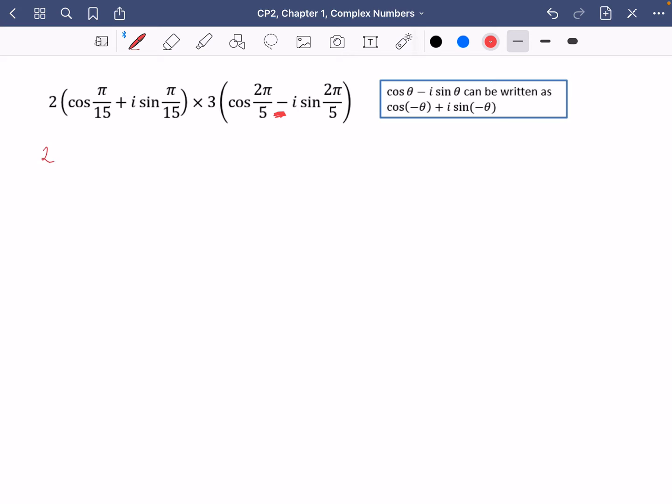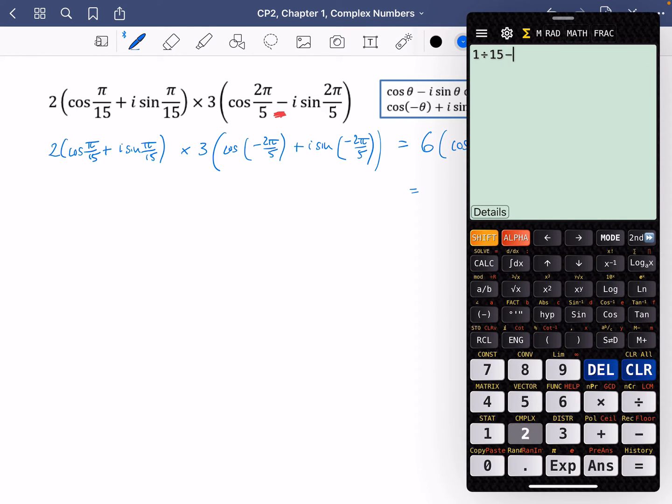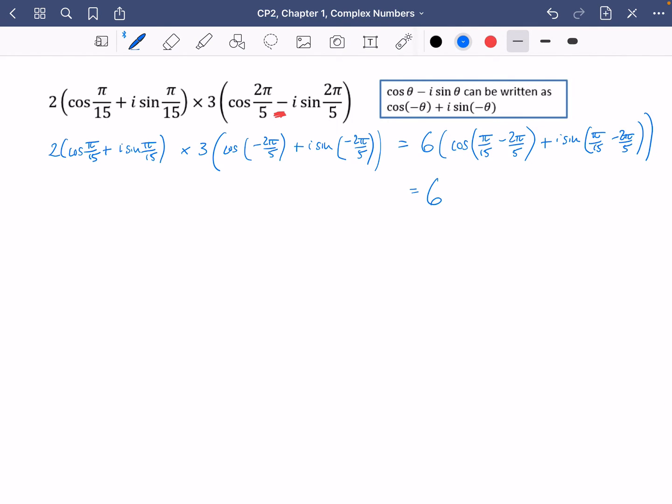So I'm going to rewrite the second function. To begin with, I have 2 cos of pi over 15 plus i sine pi over 15 multiplied by 3 cos of minus 2 pi over 5 plus i sine of minus 2 pi over 5. So I can multiply together the 2 and 3 to get 6. I'm then going to have cos of pi over 15 plus the negative 2 pi over 5. Same thing for sine. And I'm just going to do 1 over 15 minus 2 over 5, which is minus pi over 3. So I'm just going to say that 6 e to the minus pi over 3 i.